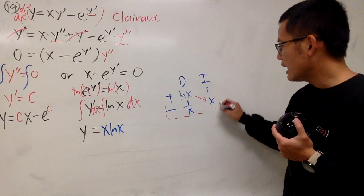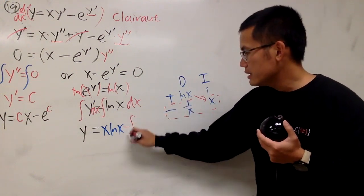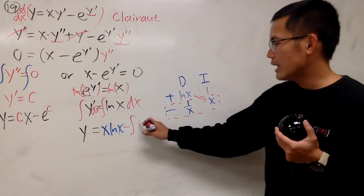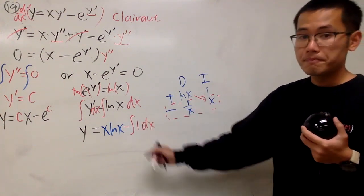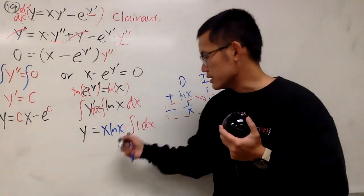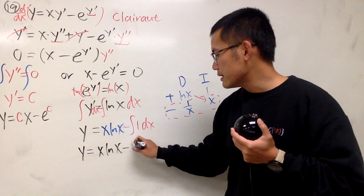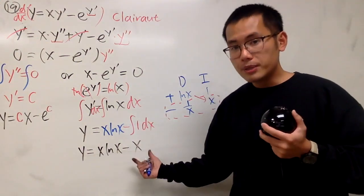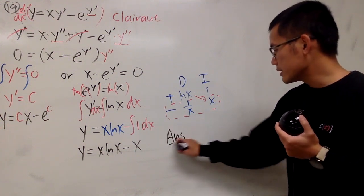First part of the answer is this and that, so we have x ln x. But don't forget, you still have to have an integral when you multiply across. Minus integral. This times this, you have to integrate 1 in the x world. This times this is 1. So you can see that the answer is y equals x ln x minus x. Do you need to put on a plus c? No, you don't have to.